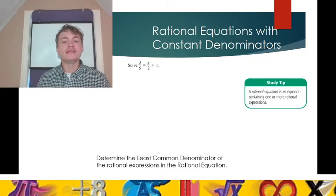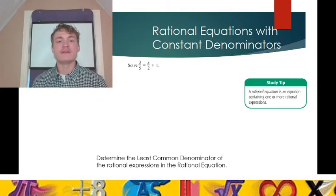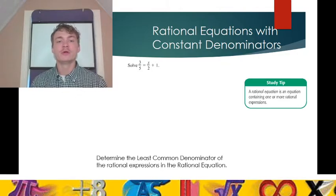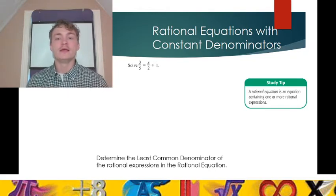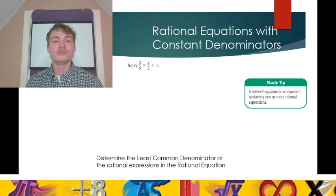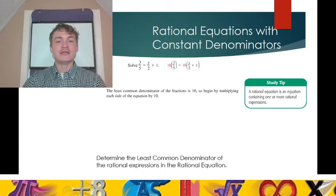So how could we solve for x? Let's determine the LCD of the rational expressions. We have two rational expressions: 3/5 and x over 2. The denominators are 5 and 2. What is the LCD of 5 and 2 — in other words, what is the smallest number that both 5 and 2 can divide into? We find the LCD by looking at the factors: 5 is prime, 2 is also prime. So the LCD must consist of the factors 5 and 2: 5 times 2 gives us 10. The least common denominator is 10.